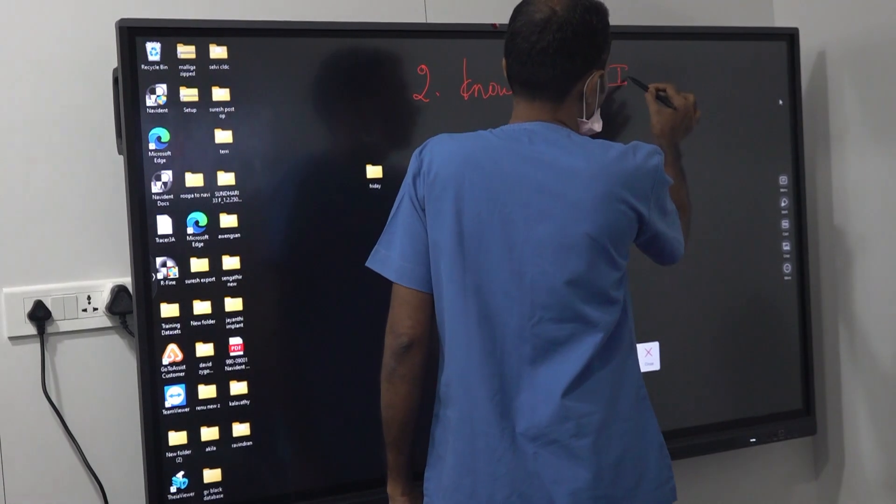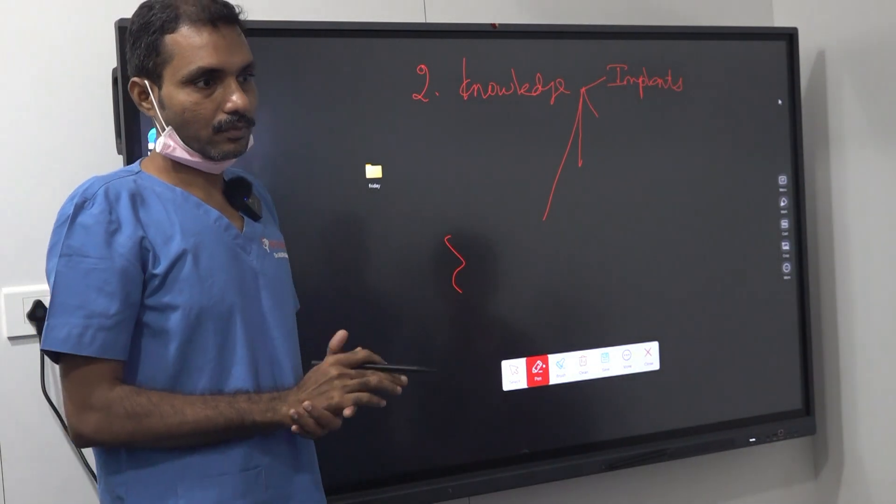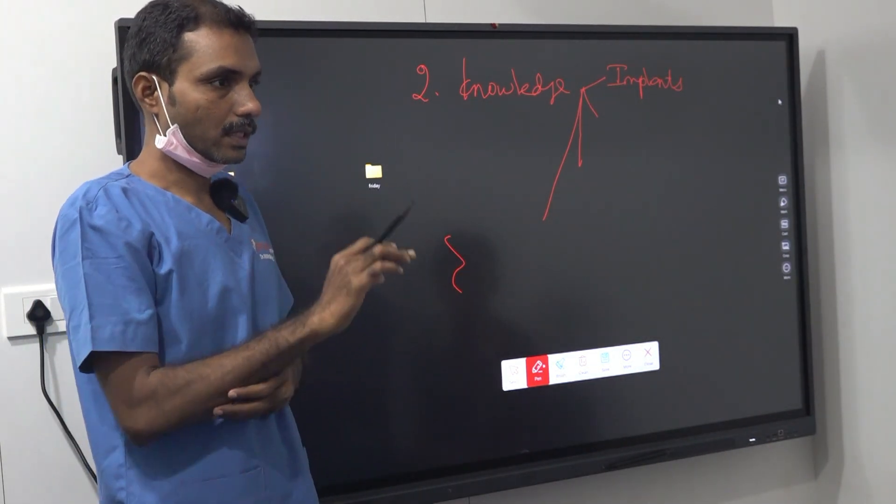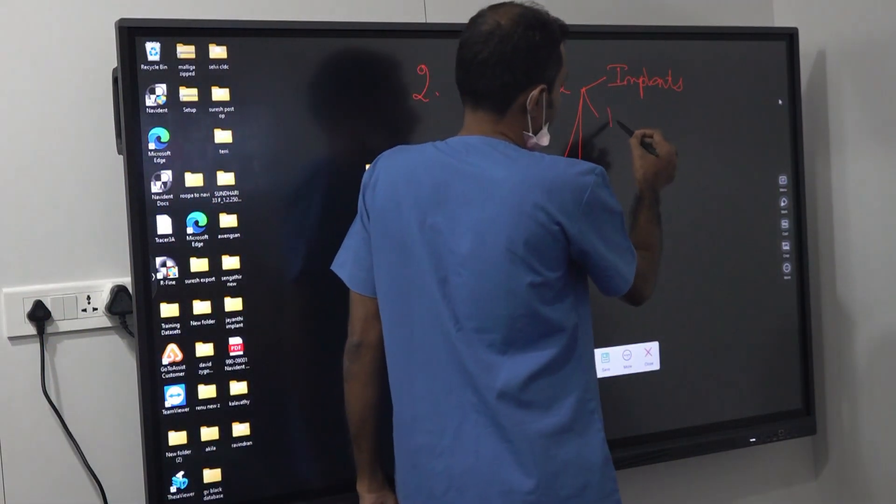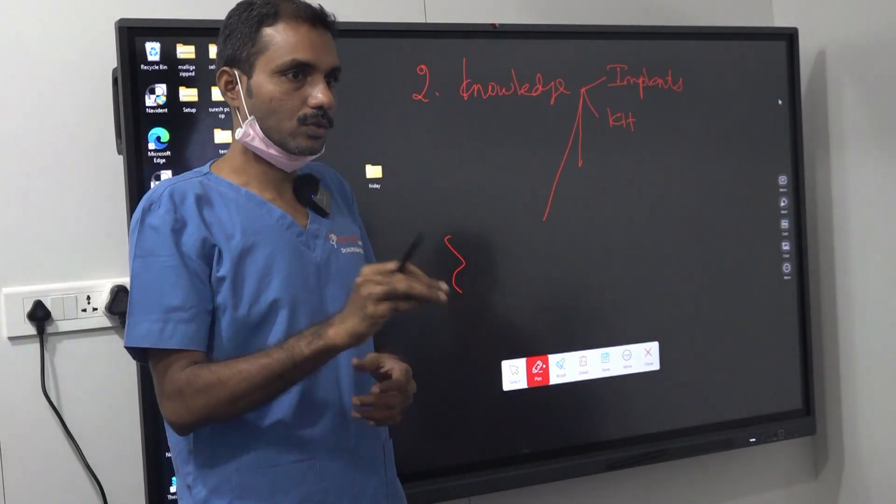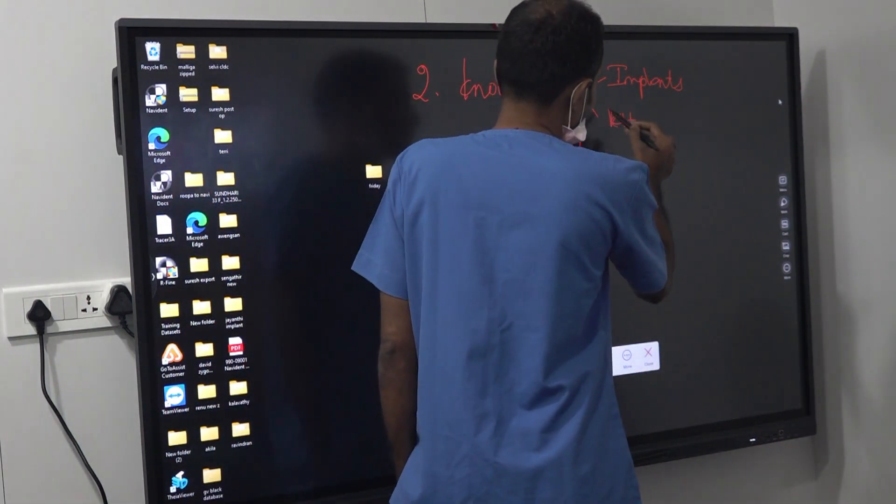One is we should know about the implants - what implants are using? We should know about that. What is the design? Where is it indicated? Where not to place? What is the diameter? What is the length that is available? These things we should know. And the kit - implant kit. What are all the components inside the kit? How to use that? What is the purpose of each instrument?